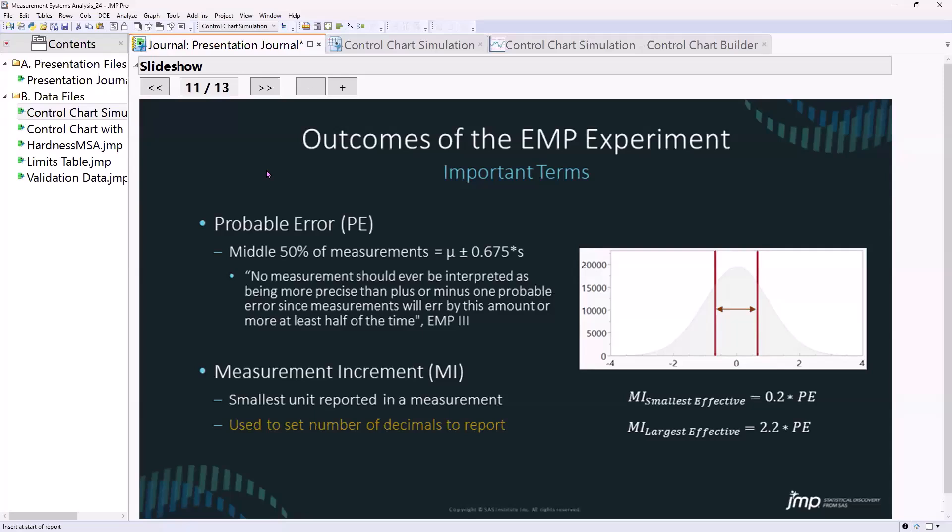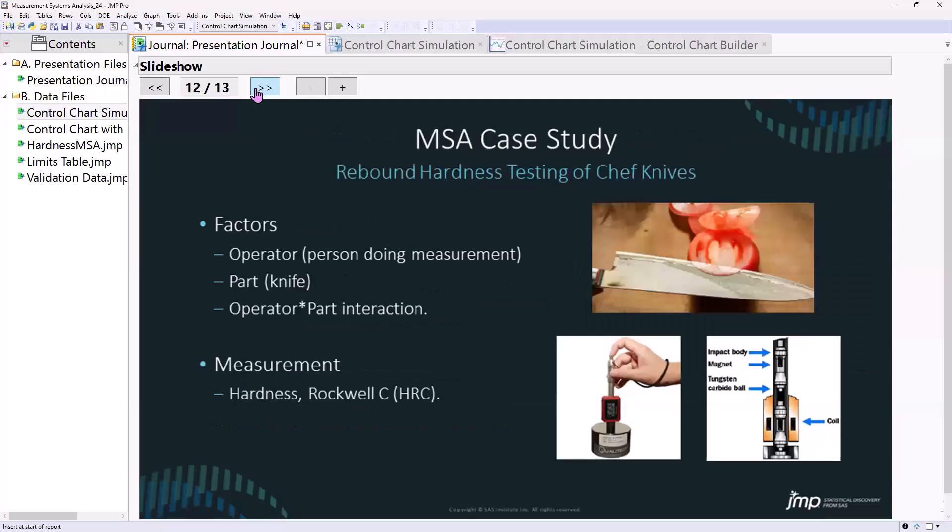Probable error and measurement increment are the statistics that EMP method uses to help us report the precision of the instrument. It's not what the data sheet says on the instrument that you bought from whomever. It's after you do the study, let the data tell you what you need to report, and we'll show that in demonstration. All right, so for the fun part, this is something that's simulated, but I love cooking. I'm kind of a knife fanatic, a chef knife fanatic, and I was thinking about, you know, if I were a manufacturer of chef knives, what might I do to make a knife that performs well in a kitchen?